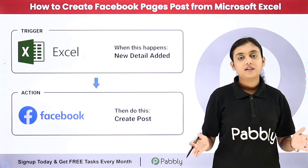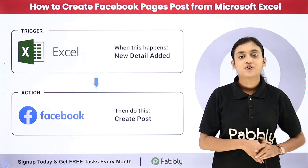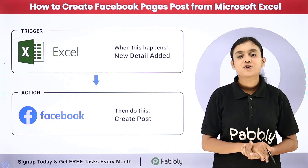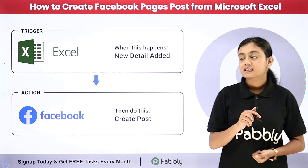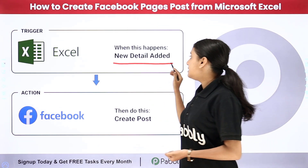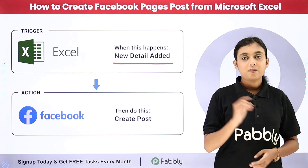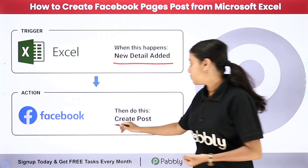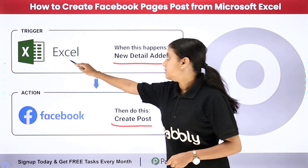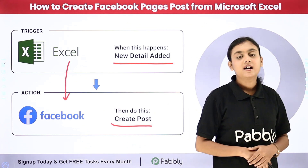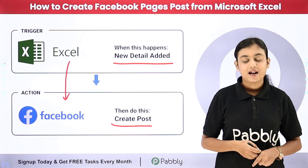I create all of my posts manually, which takes me a lot of time. The solution to this problem is I created an automation using Pabbly Connect, which is an amazing automation and integration software. As soon as I add the details of the content I want to post on my Facebook page in my Microsoft Excel worksheet, that content is automatically created as a post on my Facebook page. If you want to learn this amazing automation, let me take you to my screen.